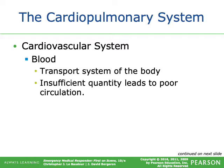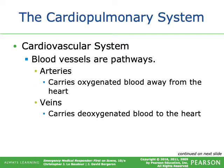Blood is the transport system of the body. Insufficient quantity leads to poor circulation. Blood vessels are the pathways: arteries carry oxygenated blood away from the heart, and veins carry deoxygenated blood to the heart. The cardiovascular system transports oxygen to body cells and brings carbon dioxide back to the lungs via veins, picking up CO2 from tissues and returning it to the heart to pump into the lungs.